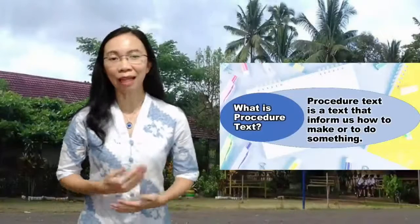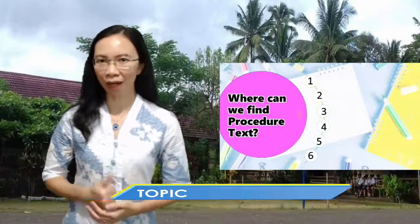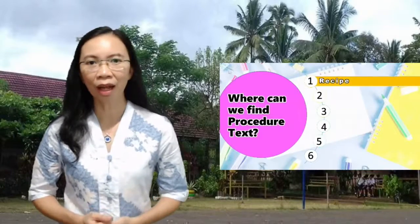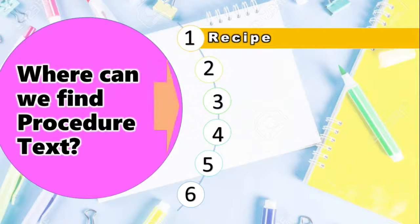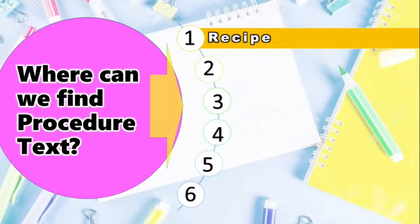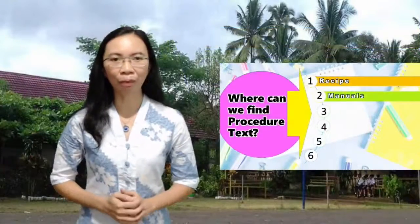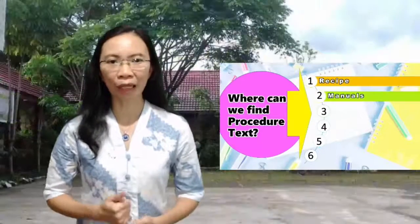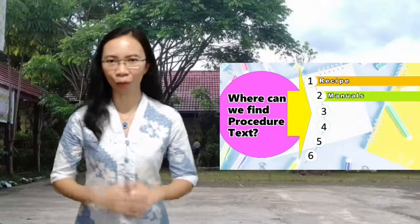Procedure text bisa kita temui dalam berbagai bentuk. Misalnya, resep makanan dan minuman — for example, how to make fried rice, how to make orange juice, or how to make bubur manado. Yang kedua, manuals atau petunjuk penggunaan, yang umumnya ditemukan pada barang-barang elektronik — for example, how to use a blender, or how to operate a computer.